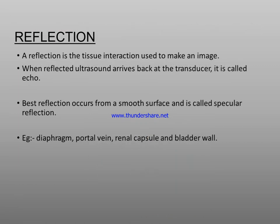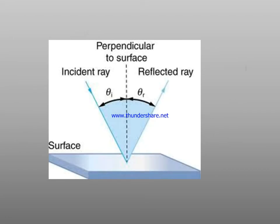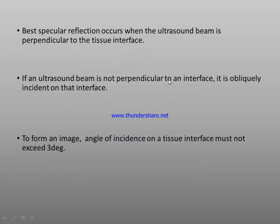In the case of reflection, reflection gives an image. Reflection is a tissue interaction used to make an image. When reflected ultrasound arrives back at the transducer, it is called an echo. Best reflection occurs from a smooth surface, called specular reflection — for example, the diaphragm, vessel wall, organ capsule, and bladder wall. The incident ray and reflected ray are perpendicular to the surface, meaning the echo interacts with the surface and reflects back in the same direction.